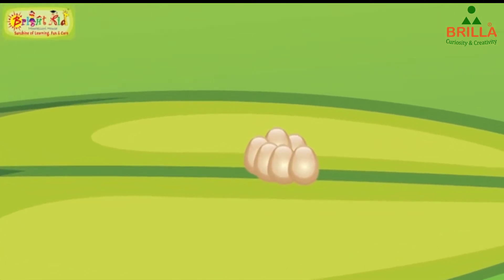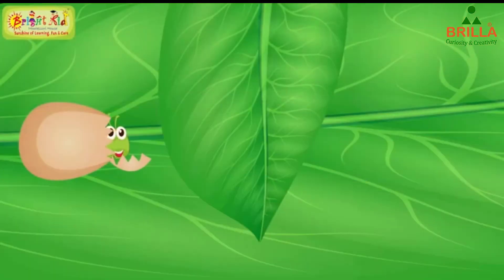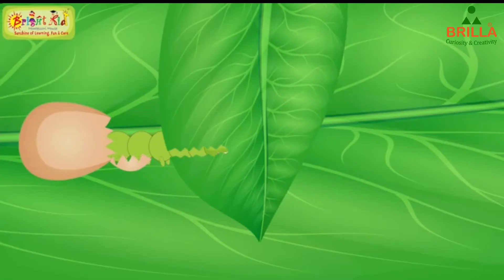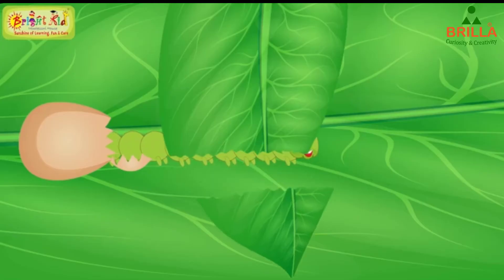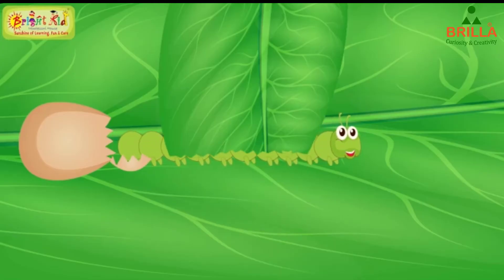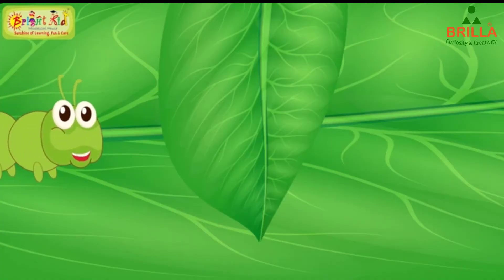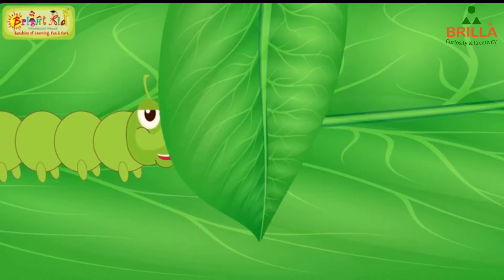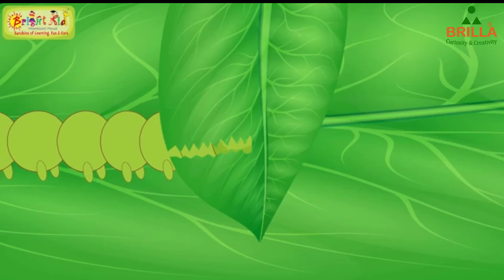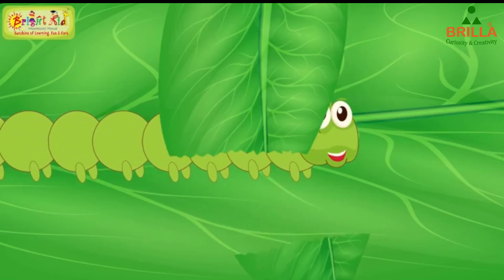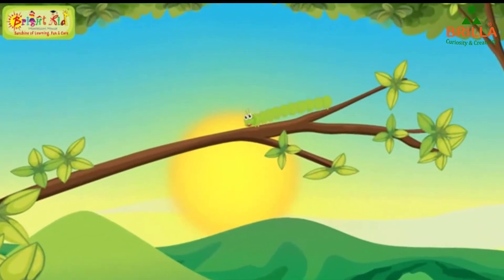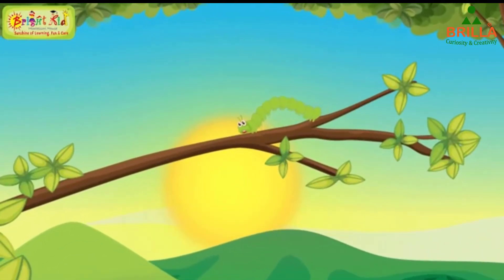The next step is larva or caterpillar. The larva or caterpillar emerges from the egg. The caterpillar feeds on plants until it reaches its full size. Then it is ready to become a pupa.